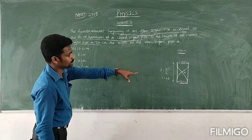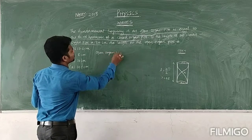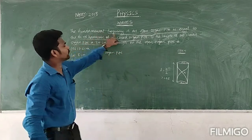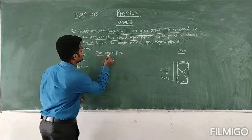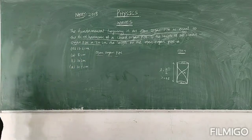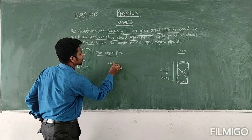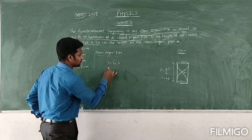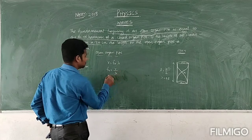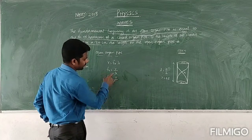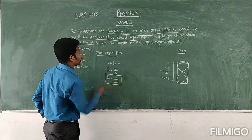For the open organ pipe, the fundamental frequency of the open organ pipe: we know the formula V equals F-naught times lambda. So F-naught is the fundamental frequency, and we can write F-naught equals V divided by lambda. Lambda equals 2L, so the fundamental frequency of the open organ pipe is V divided by 2L.